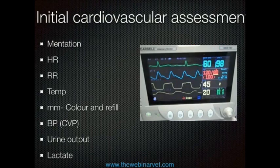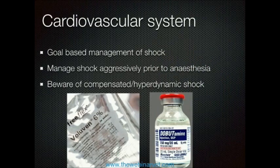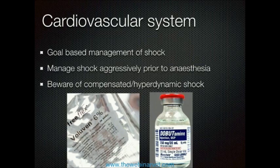In cases where the animal has been hit by a car and you're exploring the abdomen for a bleed or splenic rupture, or where there's a septic abdomen, you really want to make sure blood pressure and urine output are adequate and that they're not in renal failure or severe shock before you start. The most common modern approach to managing shock is a goal-based assessment process, where you look at parameters like heart rate, blood pressure, and mean arterial pressure and work to bring those back towards normal. It's really important to manage shock aggressively before giving the anesthetic.